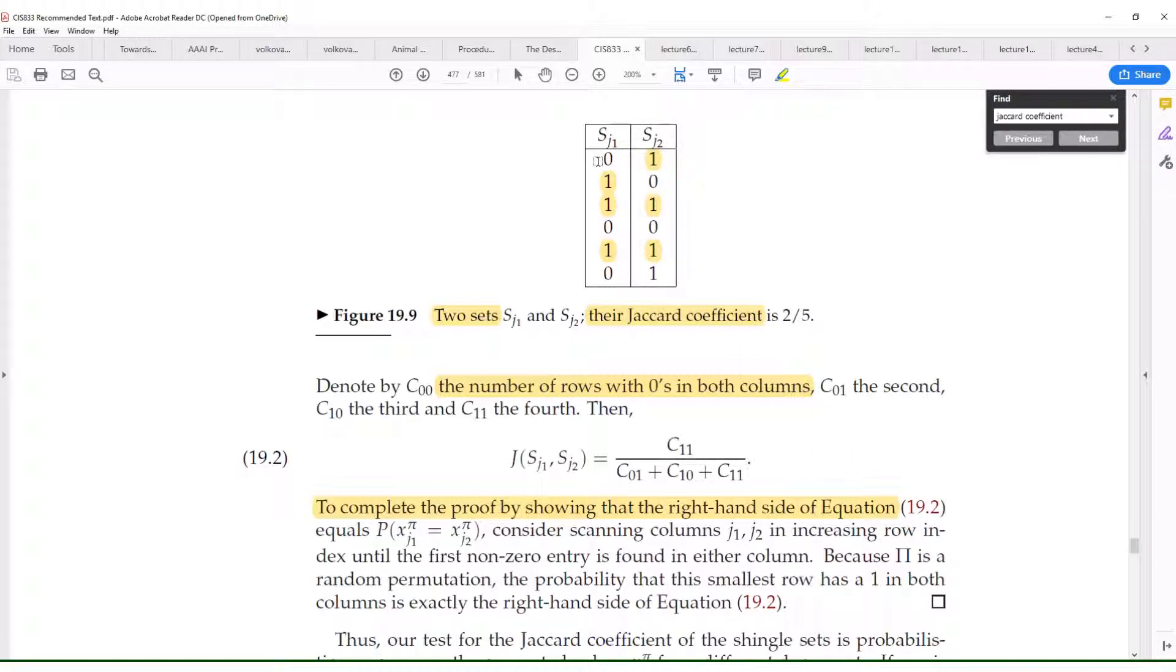Here zero means that that particular term—on this row, each line of row represents a particular term—it means that that particular term does not occur in SJ1 but it occurs in SJ2. Here the next term on the next row occurs in SJ1, does not occur in SJ2. Similarly if you go on here, the next term occurs in both SJ1 and SJ2. Here it does not occur in any of them.